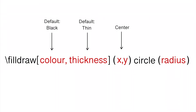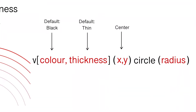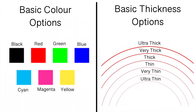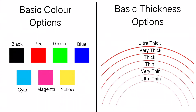The words in red are variable. There are eight basic colors you can easily use just by typing in its name: white, black, red, green, cyan, magenta, or yellow. If no color is specified, black will be used.